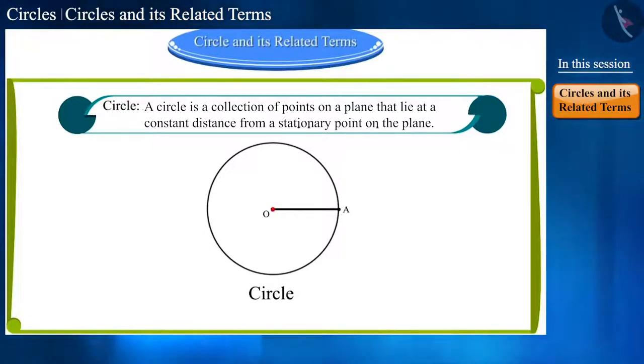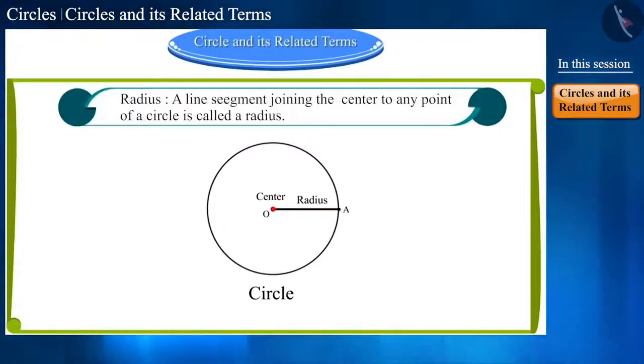We call the stationary point the center of this circle. Point O is the center of this circle. And we call this constant distance as the radius of the circle. Line segment OA is the radius of this circle. We also define it as the line segment joining the center to any point of the circle is called the radius.